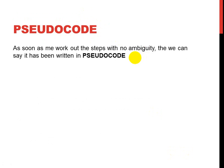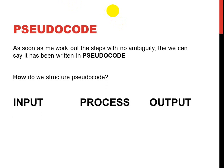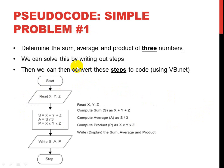Where it becomes far more interesting is where the algorithm gets turned into pseudocode. Pseudocode means working out the steps with no ambiguity. As soon as we've got steps that have no ambiguity, we can say it is pseudocode. Pseudocode has a certain format or set of rules: we look at our inputs, we look at how we process those inputs, and then we look at what sort of output or printout we need.